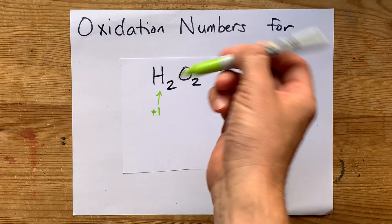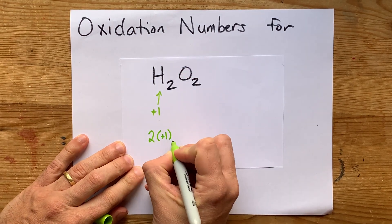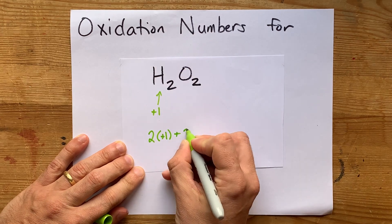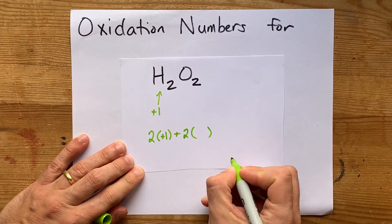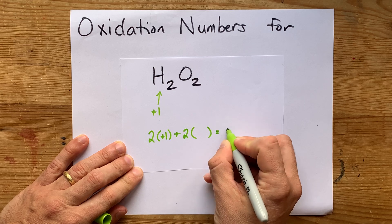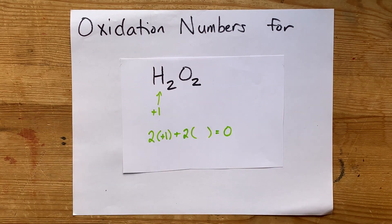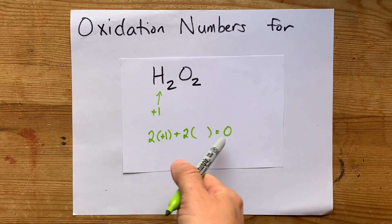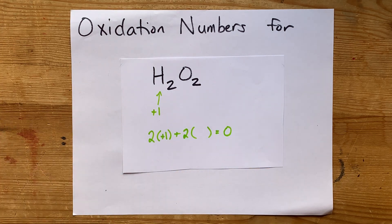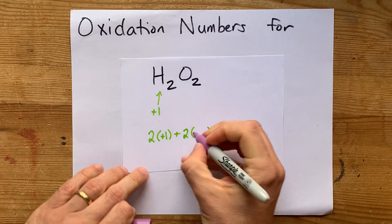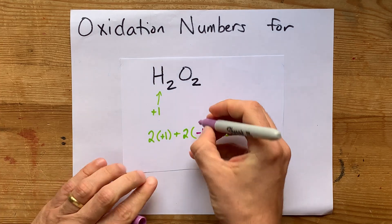What we have here is two plus ones for the hydrogen, plus two of whatever oxygen is, equaling zero — the total charge on the particle. Doing the math, it should be obvious that oxygen has a minus one oxidation number.